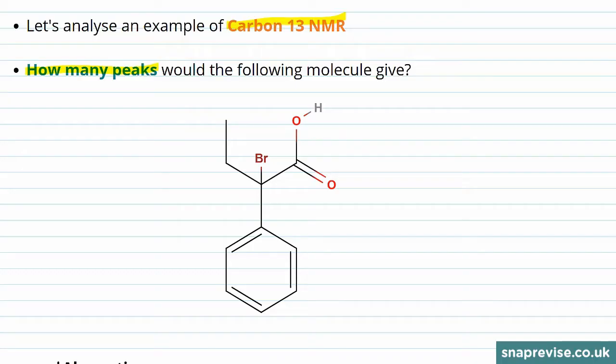Well we know from the previous part of the video that each environment of carbon is going to give its own peak. So here's one carbon. This is distinctly different from this carbon because obviously this carbon is only attached to one other carbon, whereas this one is attached to two on either side.